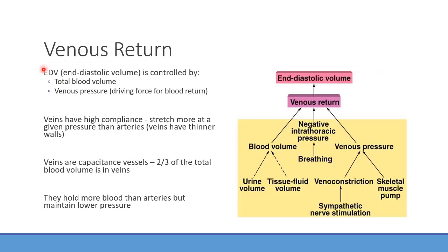Venous return and end-diastolic volume are mainly controlled by total blood volume and venous pressure. Veins are a low-pressure system compared to arteries. They are called capacitance vessels — they can hold much more volume, are more compliant and can stretch more. About two-thirds of blood volume should be in the venous side at any given time.